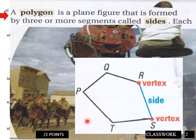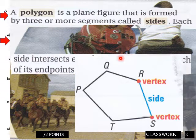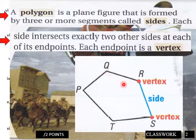Page two of your classwork. A polygon is a plane figure that is formed by three or more segments called sides. Each side intersects exactly two other sides at each of its endpoints. Each endpoint is a vertex. We have vertex here, side, vertex.